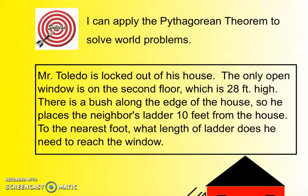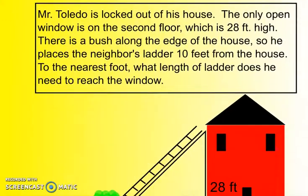So let's look at our first world problem. We have Mr. Toledo, and he is locked out of his house. The only open window is on the second floor, which is 28 feet high. There is a bush along the edge of the house, so he places the neighbor's ladder 10 feet from the house. To the nearest foot, what length of ladder does he need to reach the window?